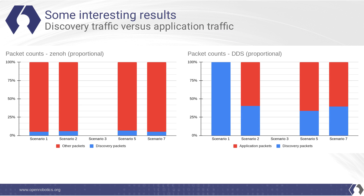Some interesting results: looking at discovery traffic versus application traffic and comparing packet counts for discovery in Zenoh versus DDS, there's a huge difference. Ignoring scenario one — where DDS had problems refusing to use anything other than shared memory for transport — for all other scenarios, Zenoh tends to have discovery packets at about five to ten percent, usually no more than that. But DDS ranges between 30 and 40%. This means that if you're running a DDS-based ROS2 robot application, more than a third of your network traffic is simply for discovery, which is a huge amount that impacts both network performance and application performance.